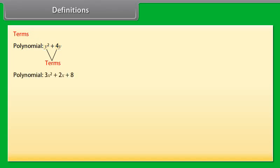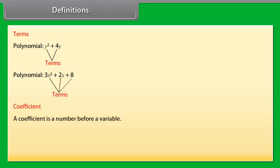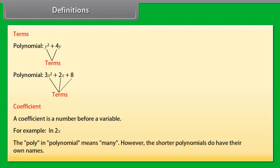Definitions — Terms. In the polynomial Y square plus 4Y, the expressions Y square and 4Y are called the terms of the polynomial. Similarly, the polynomial 3X square plus 2X plus 8 has three terms, namely 3X square, 2X, and 8.